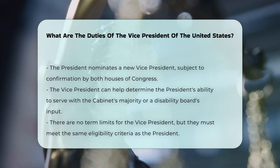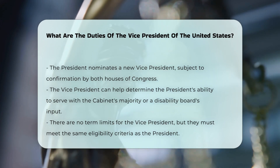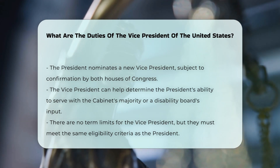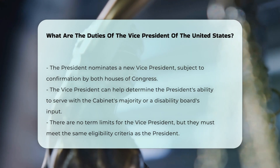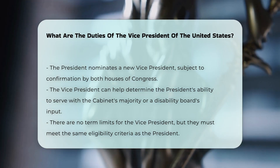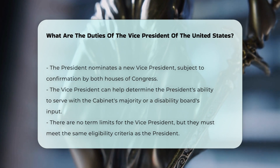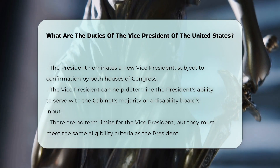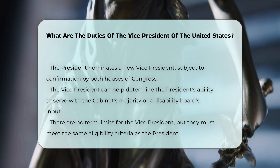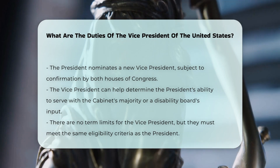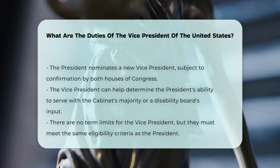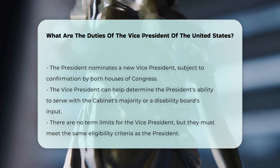The Vice President does not have term limits, but is subject to the same eligibility criteria as the President, including being a natural-born citizen, at least 35 years old, and a resident of the United States for at least 14 years.